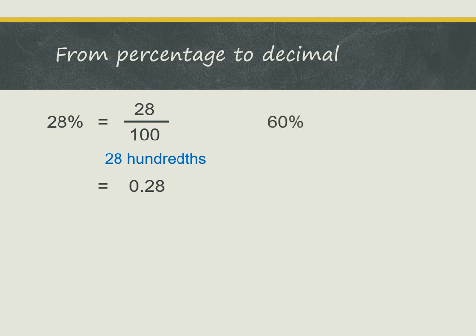Let's look at another example, 60%. 60%, we can write it as a fraction, 60 out of 100. And 60 out of 100, it's 60 hundredths.